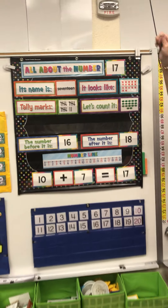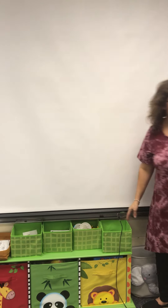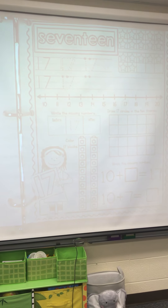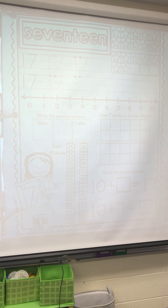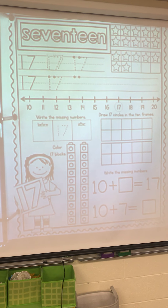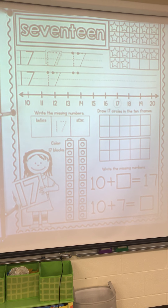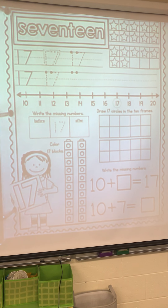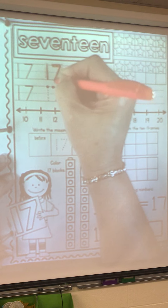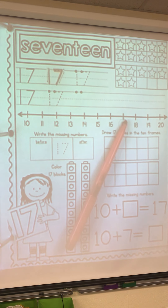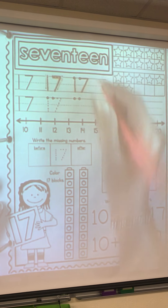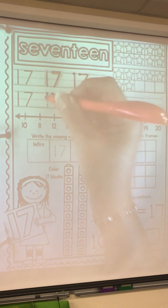Alright, let's go over and do our 17 paper. You will need your highlighter because we're going to do the 17 song and trace the numbers with our highlighter. First you make a number one, then a seven after that. That's a number seventeen. First you make a number 1, then a 7, after that, that's a number 17.